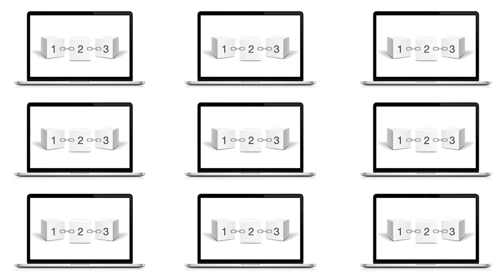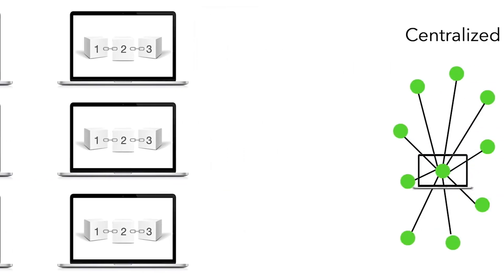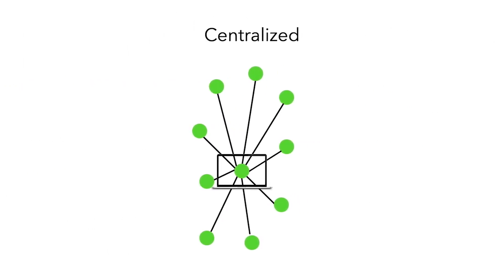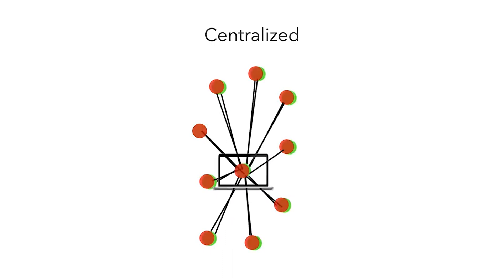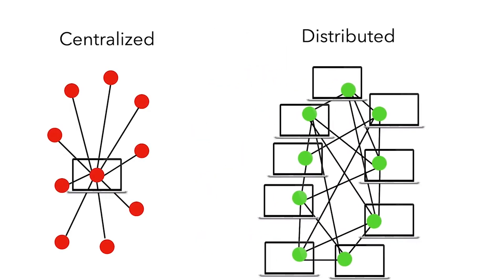Everyone has the same copy of the blockchain. Most databases are stored in a centralized location, which increases the risk of the data being tampered with if the central location is breached. A distributed network provides an extra layer of security by eliminating the centralized storage of data.